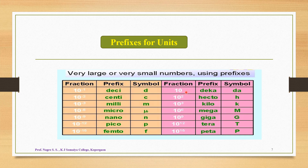On the other hand, if the fraction is 10¹, the prefix is deca (da). For 10², it is hecto (h). For 10³, it is kilo (k). For 10⁶, it is mega (M). For 10⁹, it is giga (G). For 10¹², it is tera (T). For 10¹⁵, the prefix is peta (P). These are the various prefixes used for units when a large physical quantity needs to be expressed in a more suitable form.